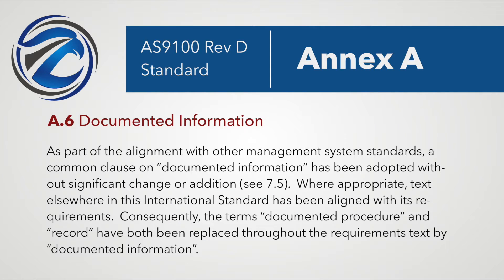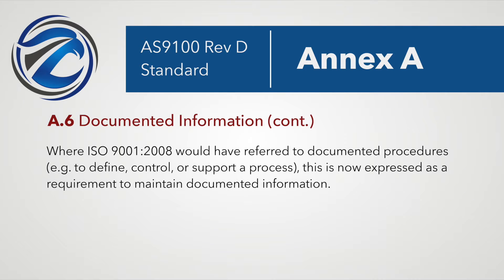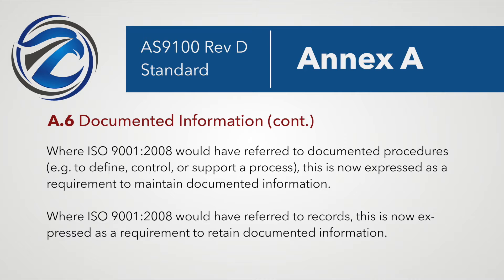Annex A.6 on documented information says: as part of alignment with other management system standards, a common clause on documented information has been adopted without significant change or addition. Consequently, the terms 'documented procedure' and 'record' have both been replaced throughout the requirements text by 'documented information.' Where ISO 9001:2008 referred to documented procedures, this is now expressed as a requirement to maintain documented information. Where it referred to records, it's now expressed as a requirement to retain documented information.